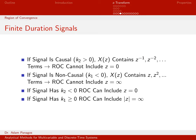The K equals 1 term gives X of 1 times Z to the negative 1, and K equals 2 gives X of 2 times Z to the negative 2. I can think of Z to the negative 1 as 1 over Z, and Z to the negative 2 as 1 over Z squared. So if my finite length signal has positive times where it's non-zero, Z equals 0 needs to be excluded from the region of convergence.